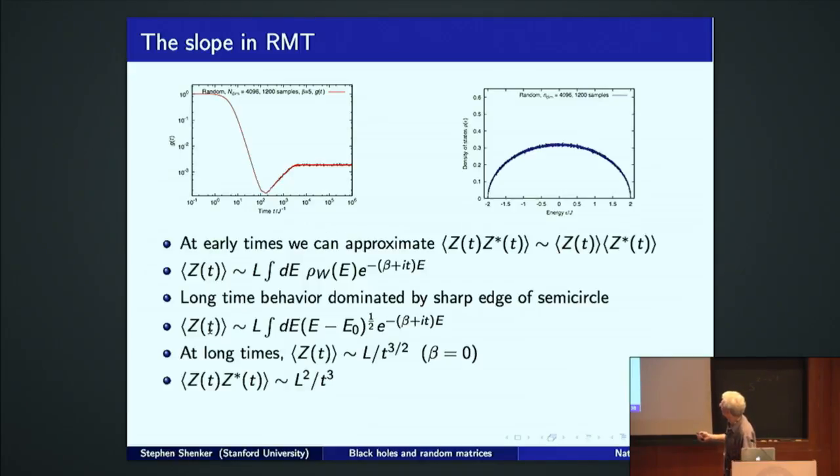So the partition function itself is just the integral over the Wigner semicircle of E to the minus beta plus IT times energy. So you're just taking roughly the Fourier transform of the Wigner semicircle with a thermal damping. Well, if the temperature is kind of, if beta is kind of large, you're focusing on the low energy end. This is a square root vanishing. You're integrating a square root singularity like this. By scaling, this goes like one over time to the three halves.